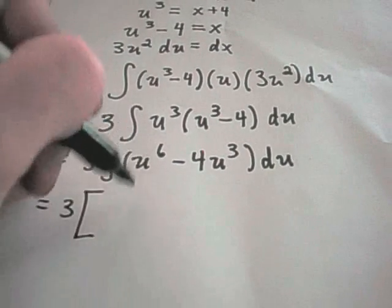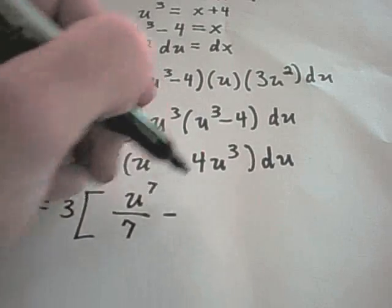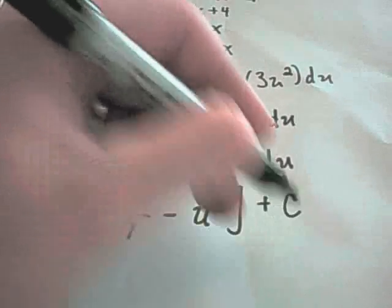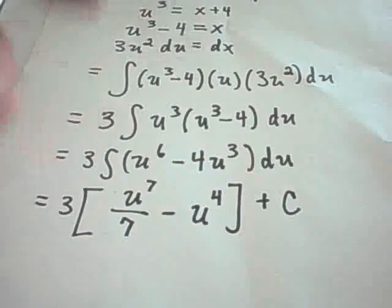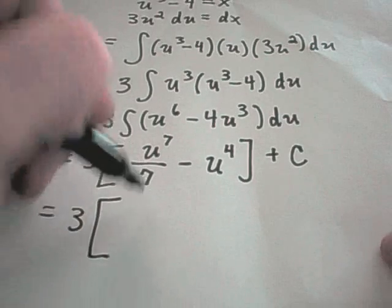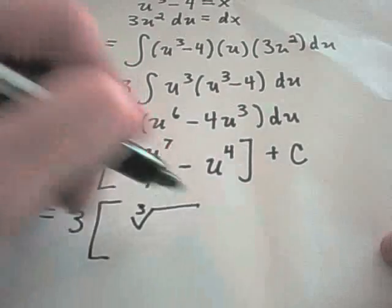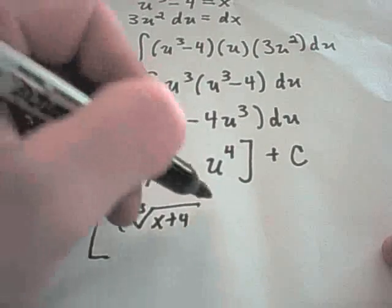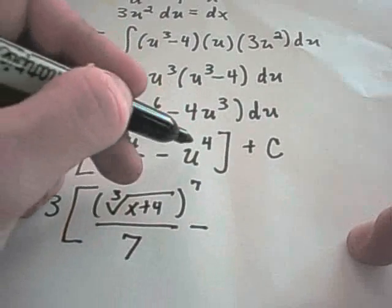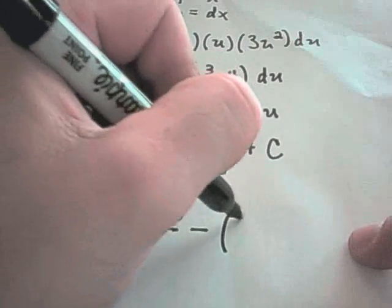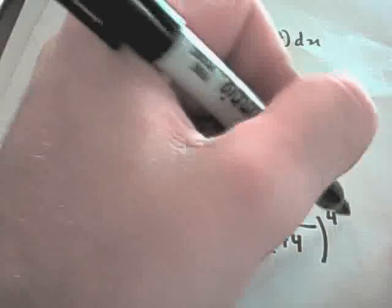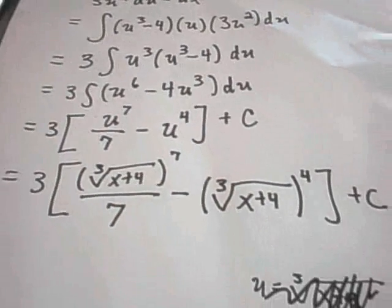Hey, this is an easy problem now. So my 3 is out front. I'll get u to the 7th over 7. I'll actually get u to the 4th over 4, which will cancel out with a 4, so I'll just have u to the 4th plus c. And now the last thing I'm going to do is simply plug back in what my u was at the very beginning. And again, my u was the cube root of x plus 4. But now that's being raised to the 7th power over 7, minus u to the 4th. Again, u was the cube root of x plus 4 raised now to the 4th power plus c. And that will be your final answer in this case.